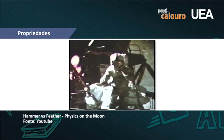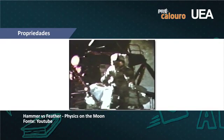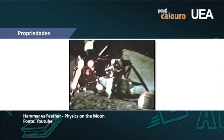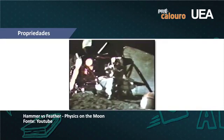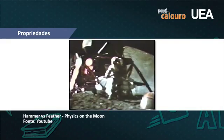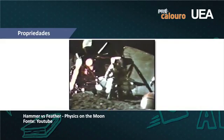Na minha mão esquerda eu tenho uma pena; na direita, um martelo. Um dos motivos de estarmos aqui é que há muito tempo Galileu fez uma descoberta importantíssima sobre corpos em queda e campos gravitacionais. Vou jogar os dois e espero que cheguem ao solo ao mesmo tempo. E chegaram — é a prova de que Galileu estava certo em suas conclusões.